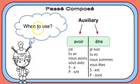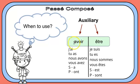So the first step, you need to decide which auxiliary to use, and then you conjugate in the present. Your choices are avoir and être. Most verbs will go with avoir, so you conjugate avoir in the present. Some will go with être, and we'll take a look at that in just a moment.